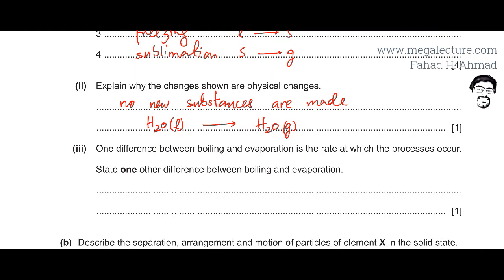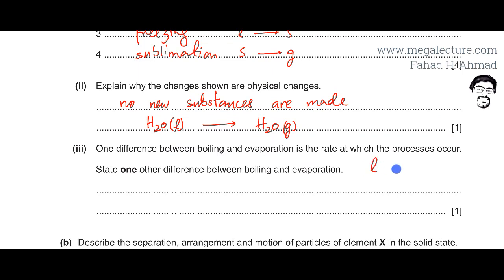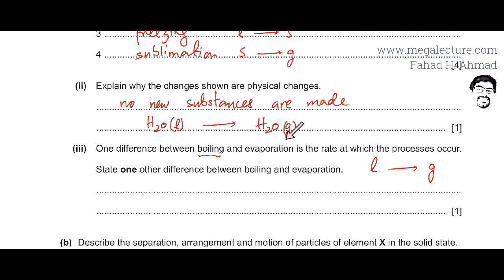In part three, you have to state one difference between boiling and evaporation. Both boiling and evaporation involve a liquid changing to a gas. When boiling happens, the process is very fast — all the particles try to change into the gaseous state at the same time. Evaporation is a slow, gradual process that happens over a period of time, but the change occurring is always the same.